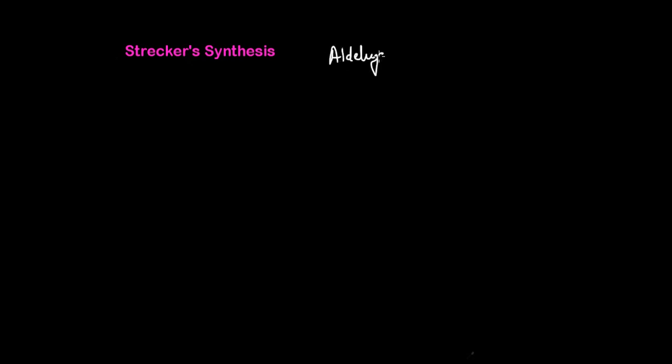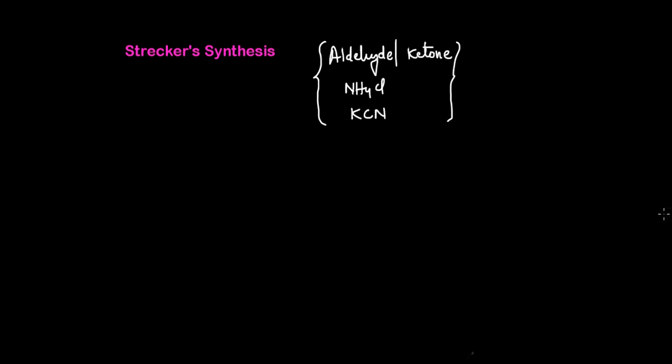The next method is Strecker synthesis. It is a very simple and convenient method for the synthesis of alpha amino acids. It involves the reaction between an aldehyde, ammonium chloride, and potassium cyanide. The precursors required are an aldehyde or ketone, ammonium chloride, and potassium cyanide (KCN).